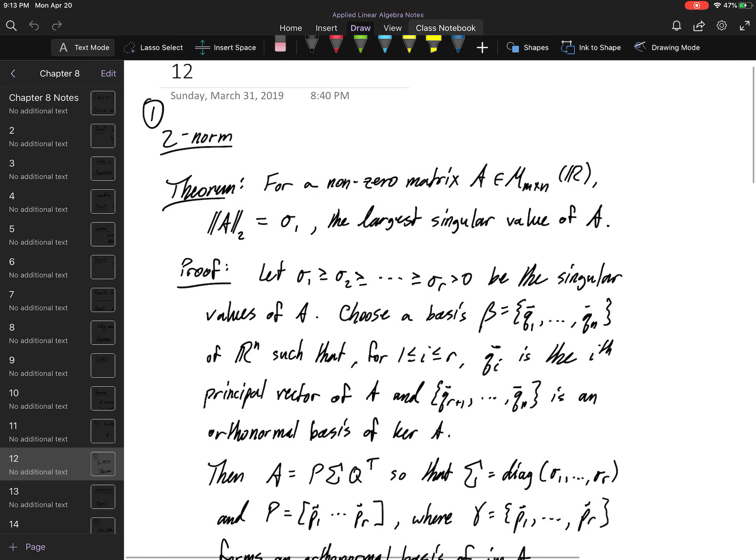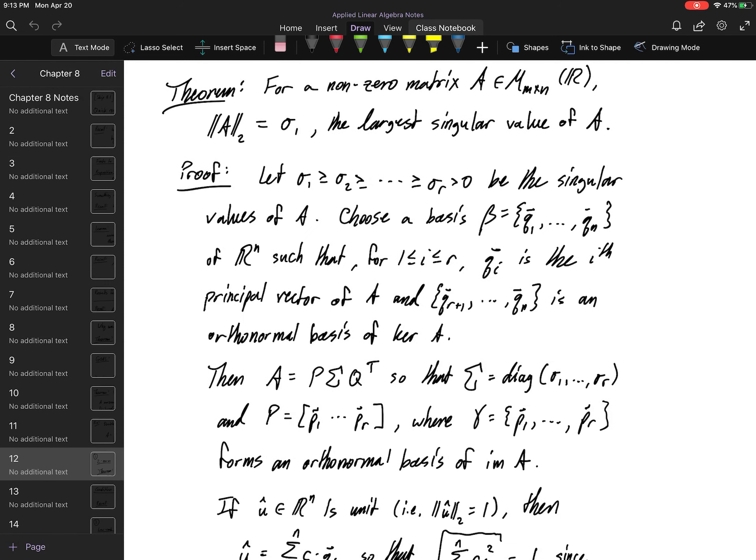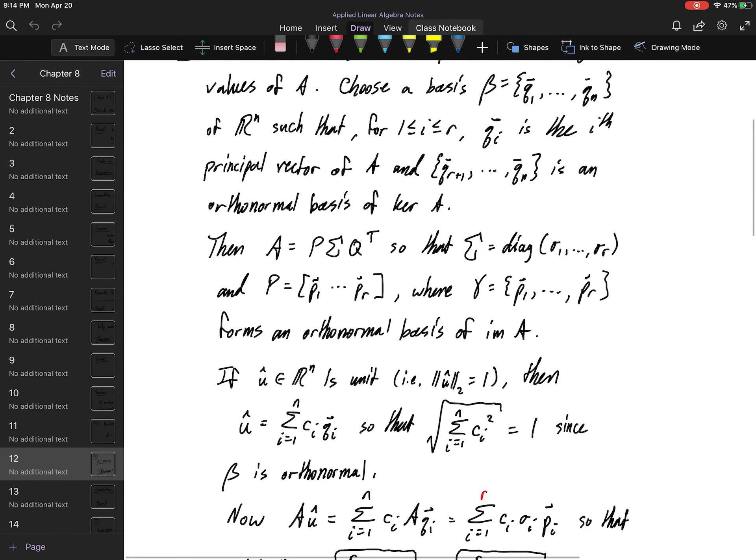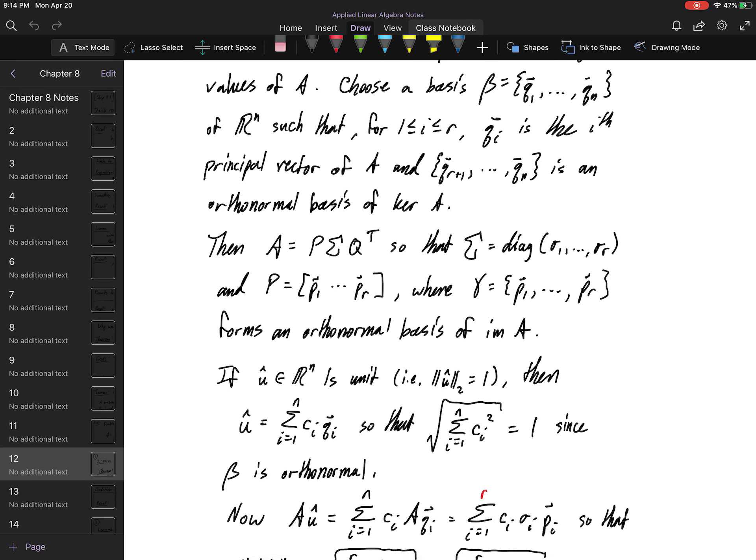I want to show that the two norm of a matrix is exactly equal to the dominant singular value of that matrix. Let's prove it. So, let's go ahead and suppose that we've already ordered and named our singular values for A, and we're going to choose a basis such that qi is the ith principal vector, and the vectors qr plus 1 out to qn constitutes a basis for the kernel of A. Remember, these are corresponding to the zero eigenvalues of A transpose A. So we don't want them. They're not principal vectors.